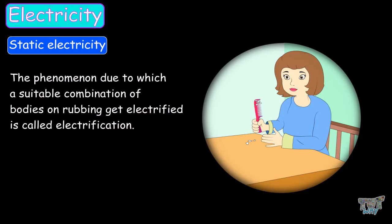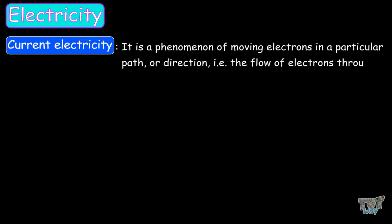Now let's learn about the other type of electricity, current electricity. Current electricity is a phenomenon of moving electrons in a particular path, or direction, that is the flow of electrons through a conducting material.